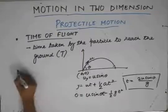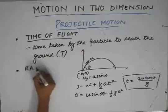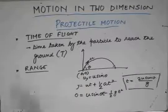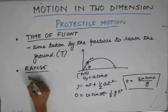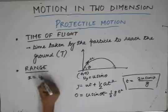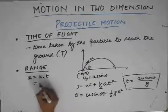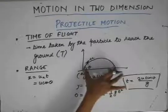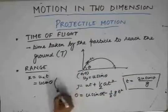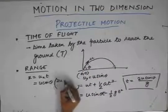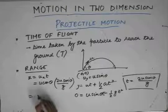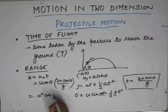The range of the particle is the maximum horizontal distance it covers. In the horizontal direction, since there is no acceleration, displacement = ux × t = u cos θ × T. Substituting the time of flight T = 2u sin θ / g, we get the range R = u² sin 2θ / g.